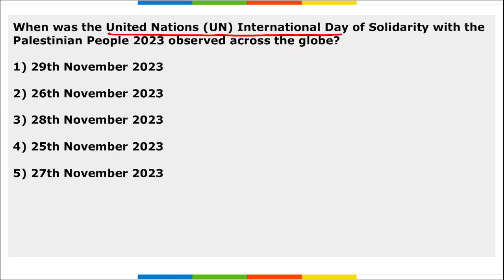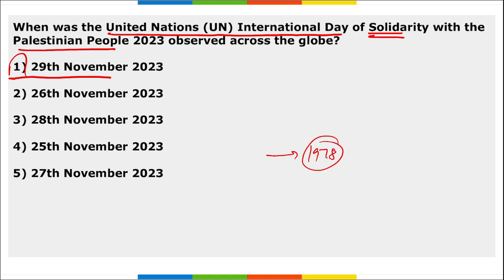Next: when was the United Nations International Day of Solidarity with the Palestinian People observed across the globe? It is 29th November. This day provides an opportunity for the international community to show support for the Palestinian people. It was first observed in 1978.